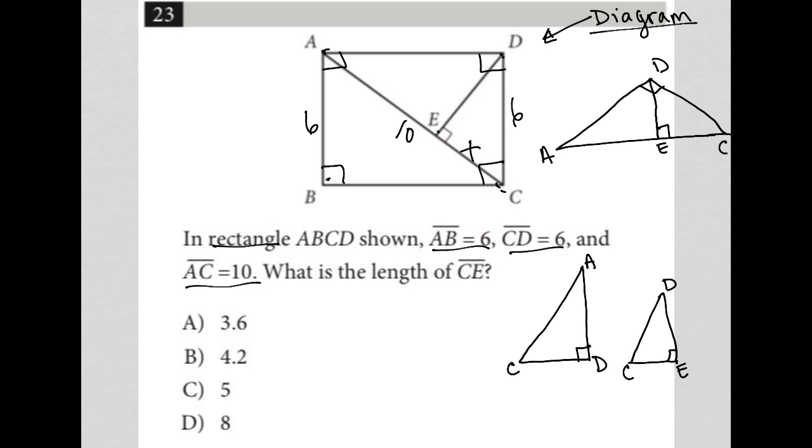Remember CE is what we're looking for, so that's my x. Remember AC, the question told us was 10, and CD the question told us was 6. And we know that CD here is the same CD, so that's also 6.